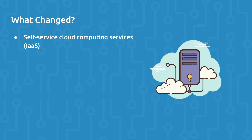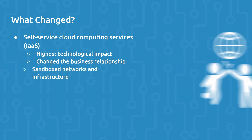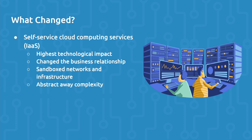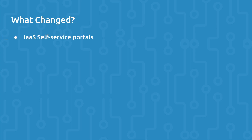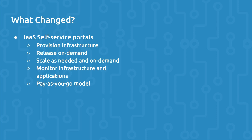Self-service cloud computing services and the beginning of infrastructure as a service had the highest technological impact on reducing friction specifically between development and operations teams. It completely changed the business relationship between operations and development teams. Cloud computing services leveraged virtualization technologies and gave their clients sandbox networks that they had full control over and access to, while at the same time abstracting the complexity of provisioning and managing infrastructure in a data center. Cloud computing services offered self-service portals where clients could provision infrastructure and access previously provisioned infrastructure, release on-demand, scale infrastructure as needed, monitor infrastructure and applications more easily, and they offered a flexible pay-as-you-go model.